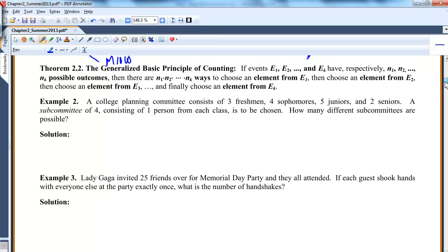The next extends that basic principle of counting. In case you have more than just two events happening, N1 events of E1, N2 events in E2, and NK events in EK, you're just multiplying all those ends together. So here's another one. A planning committee consists of three freshmen, four sophomores, five juniors, two seniors.